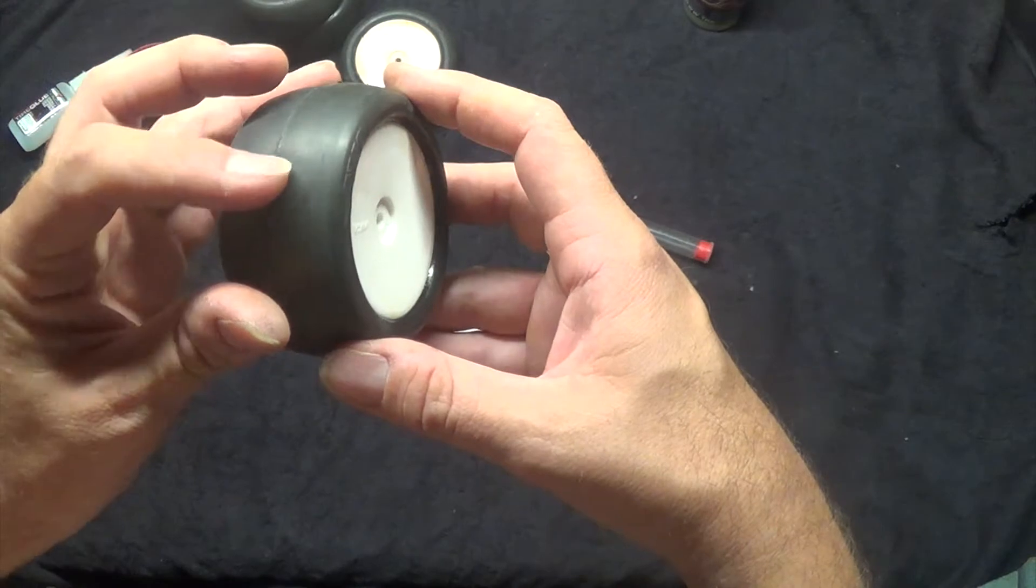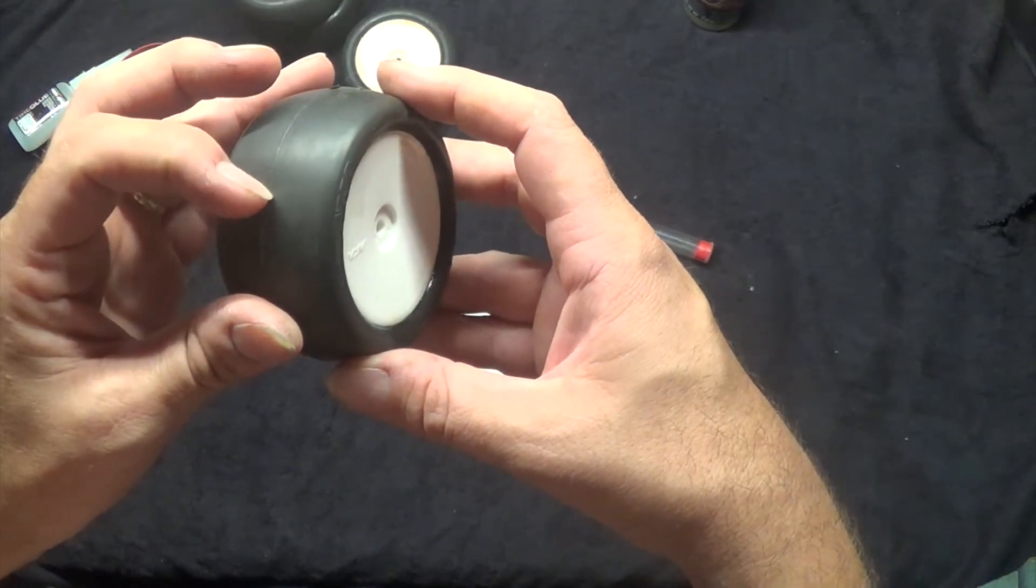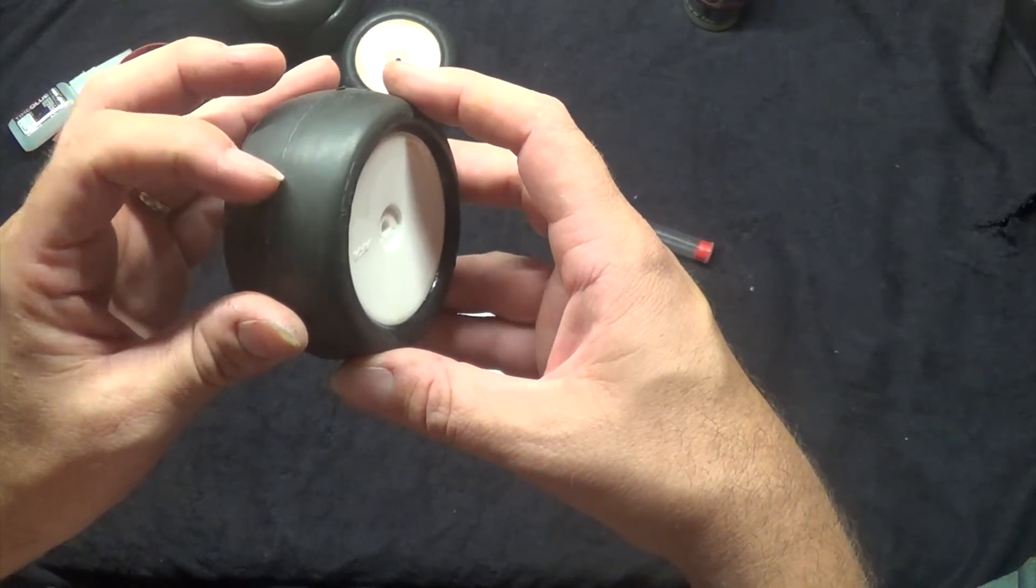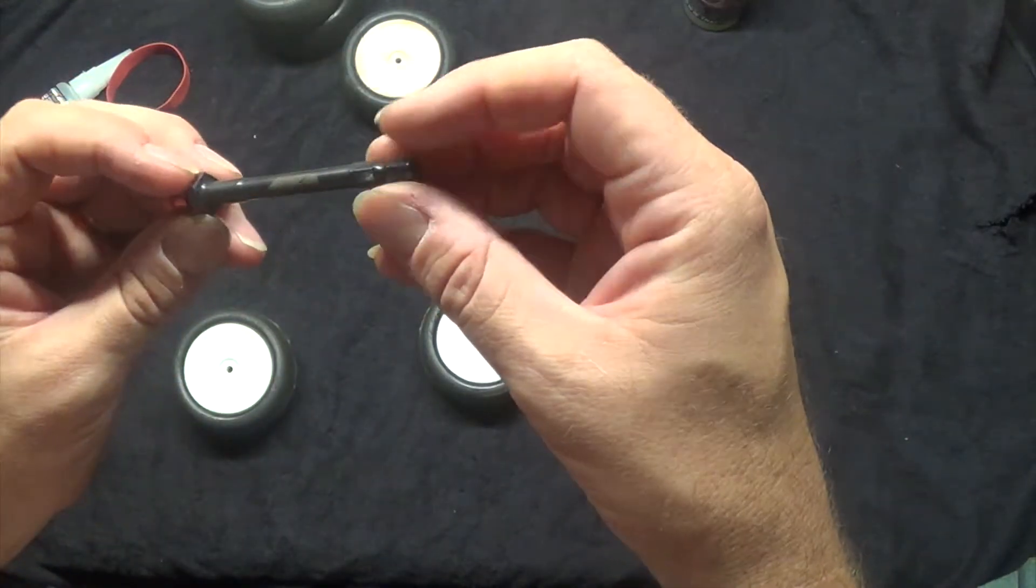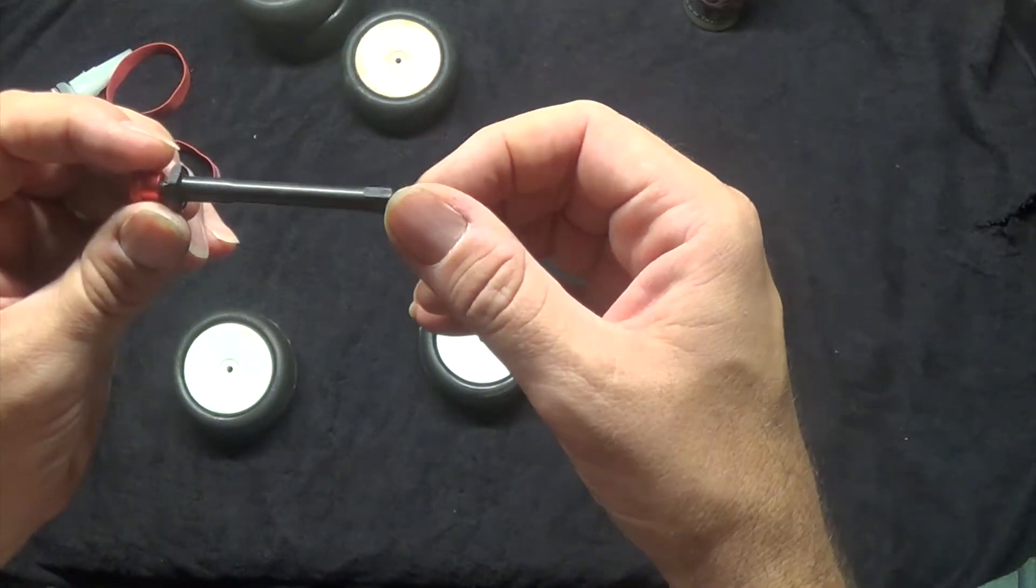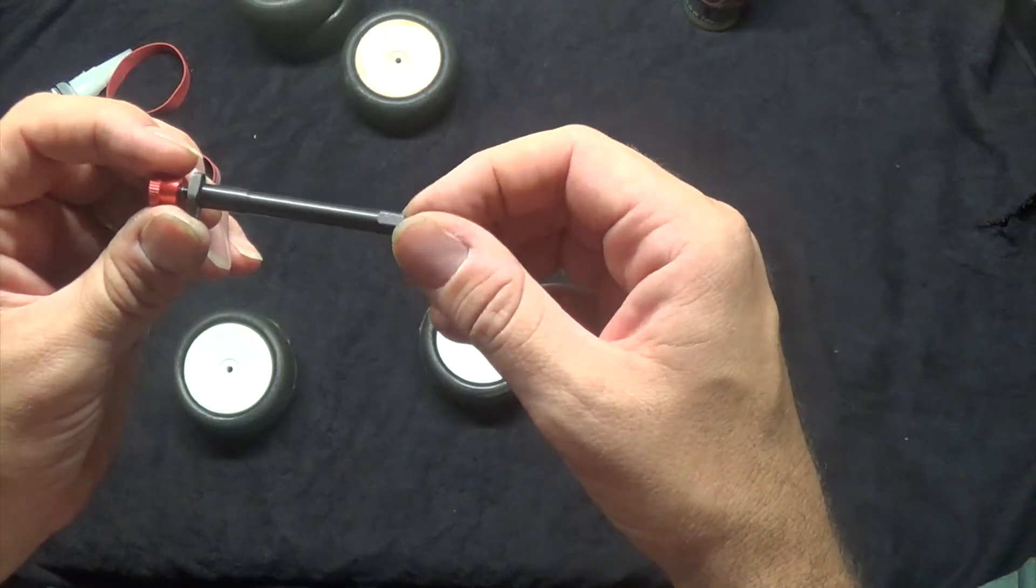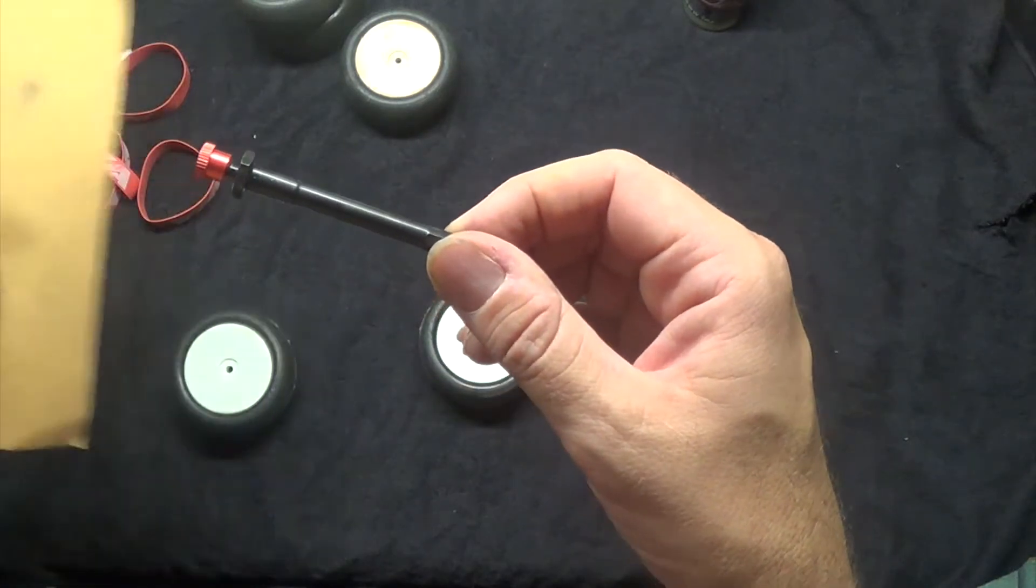What I do is a pretty easy process. I use an AKA braking tool. Pretty simple, just put it in your drill and spin it up. And I use some sandpaper.